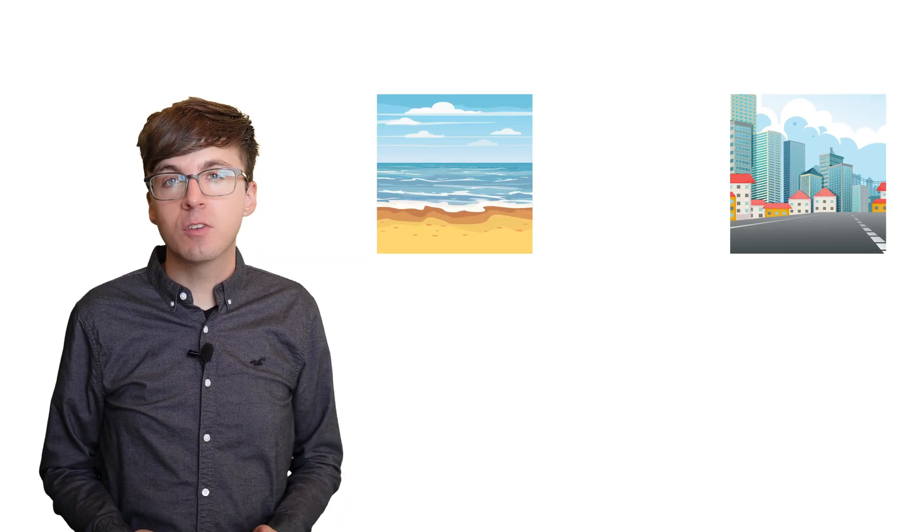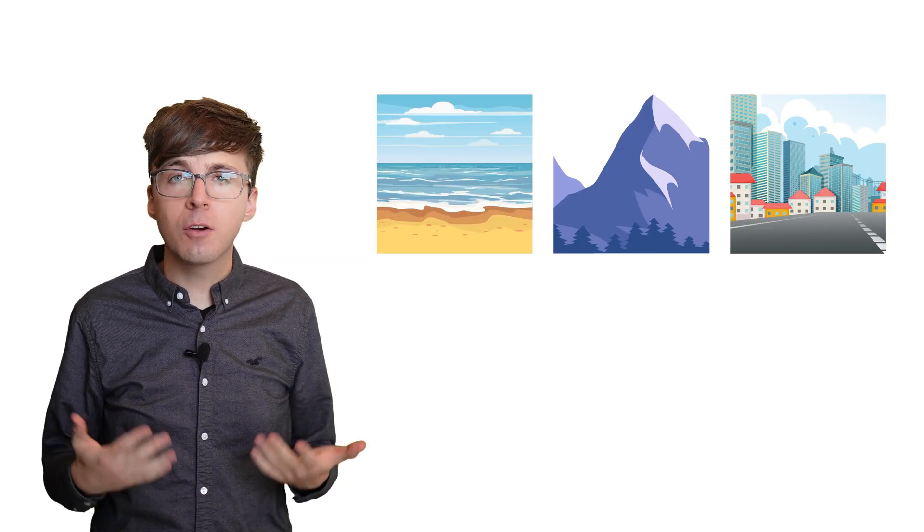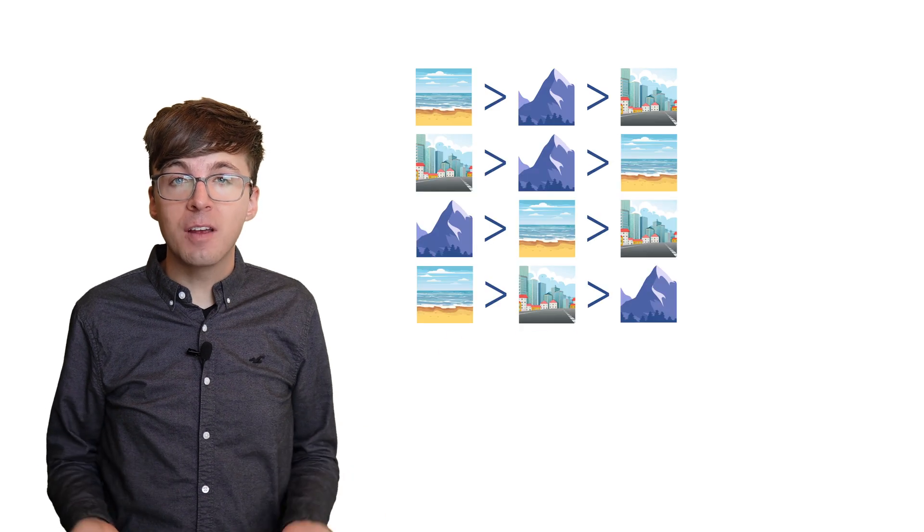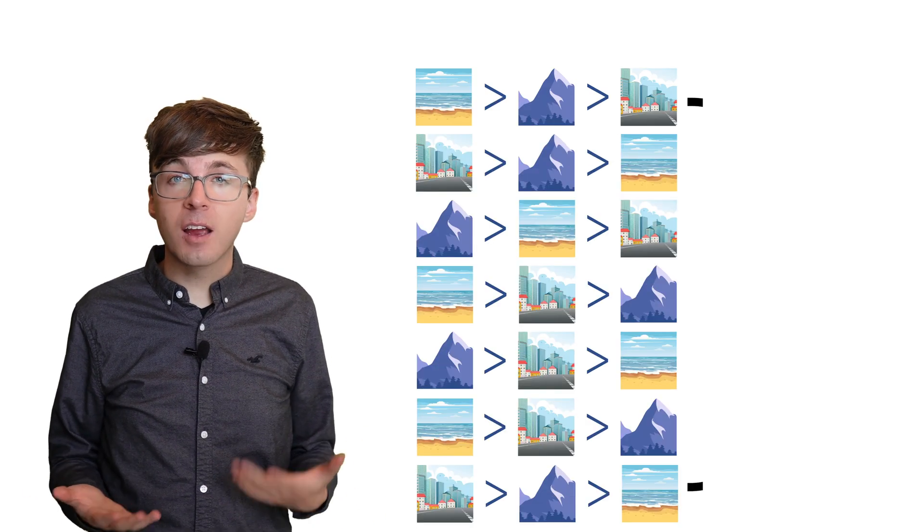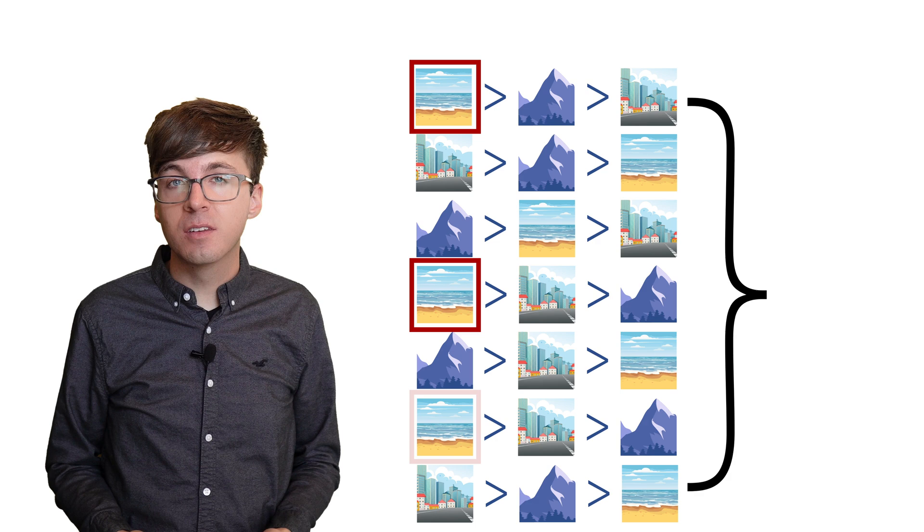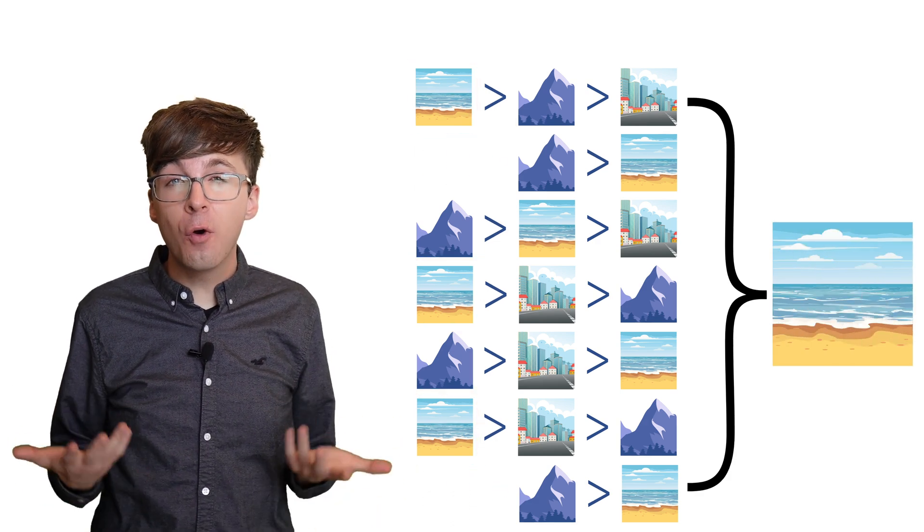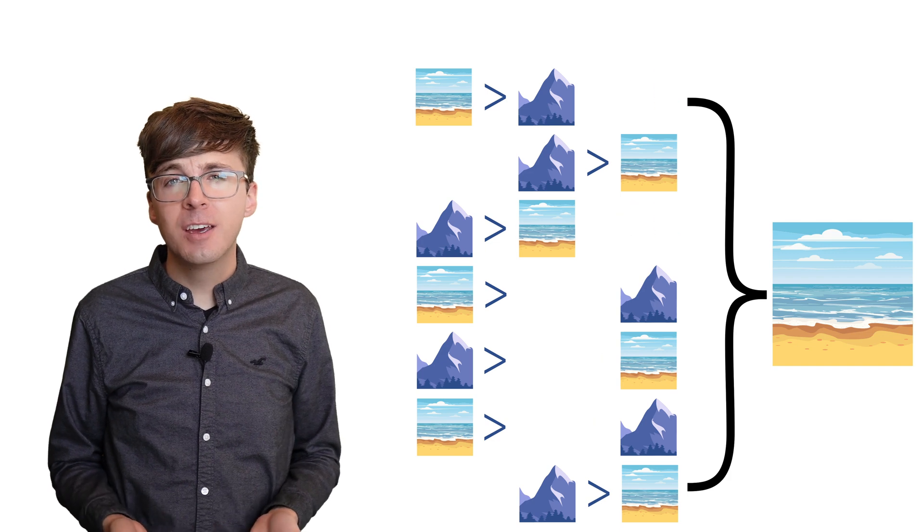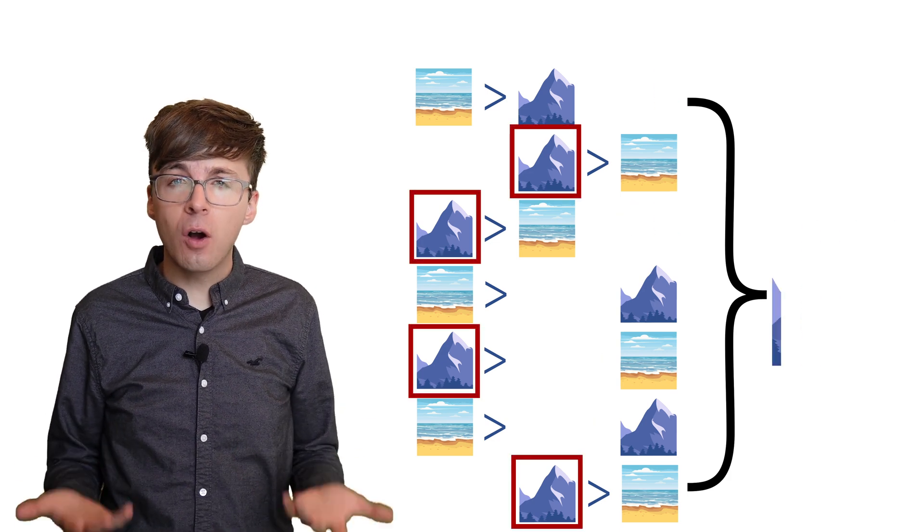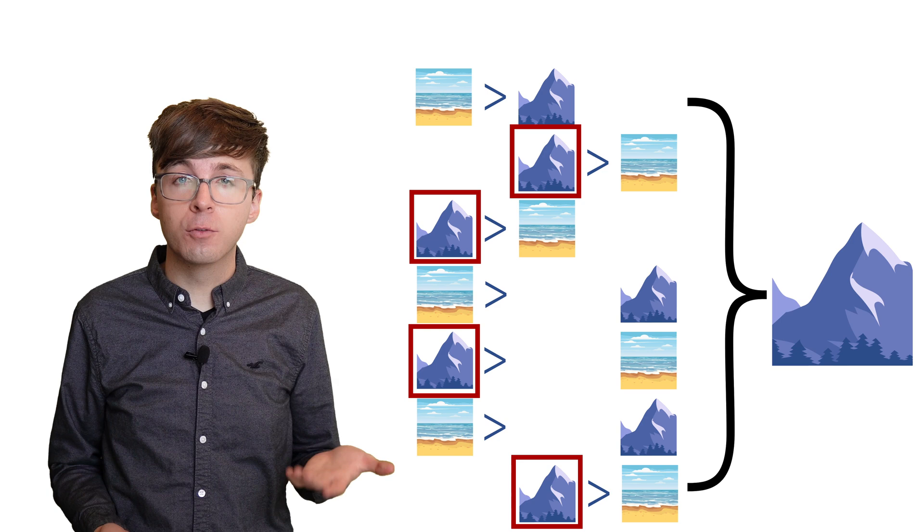You and your friends are choosing a vacation spot, either a beach, city, or mountains. You each rank the options, and now you need to decide where to go based on the rankings. Seems straightforward, right? Actually, we can prove there is no perfectly rational way to do this. No matter what method we use, there's always a possibility of a flawed group decision.